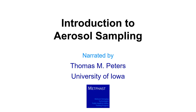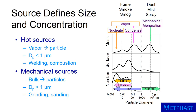Introduction to Aerosol Sampling, narrated by Tom Peters of the University of Iowa. The source of an aerosol defines its size and concentration. Concentration can be described by different metrics, including number, surface area, or mass concentration. Hot sources such as welding and combustion engines create vapors that nucleate or condense to form particles typically smaller than one micrometer in diameter.